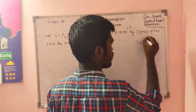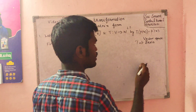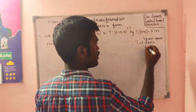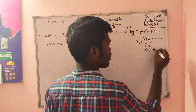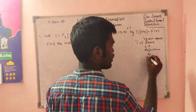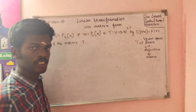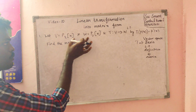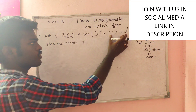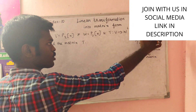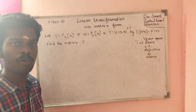First, we need to understand the vector space. Next is the basis. Next is the linear transformation. The matrix frame is the vector space, and the basis is related to the linear transformation.